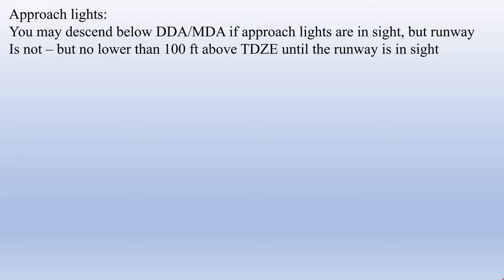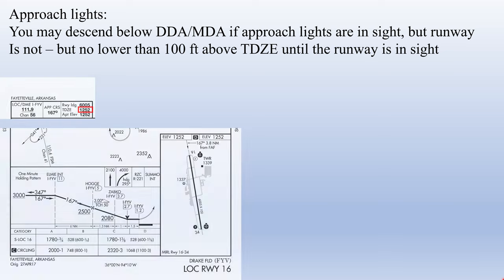Just like with an ILS approach, we can descend below our DDA or MDA if we have the approach lights in sight but not the runway, down to no lower than 100 feet above the touchdown zone elevation until the runway is in sight. Our touchdown zone elevation is 1,252 feet, so add 100 and we can go as low as 1,352 on the altimeter with just approach lights in sight. The difference from an ILS is that at a DDA of 1,830 we're nearly 600 feet off the ground versus only 200 feet on an ILS — so we have much further to descend on this non-precision approach.